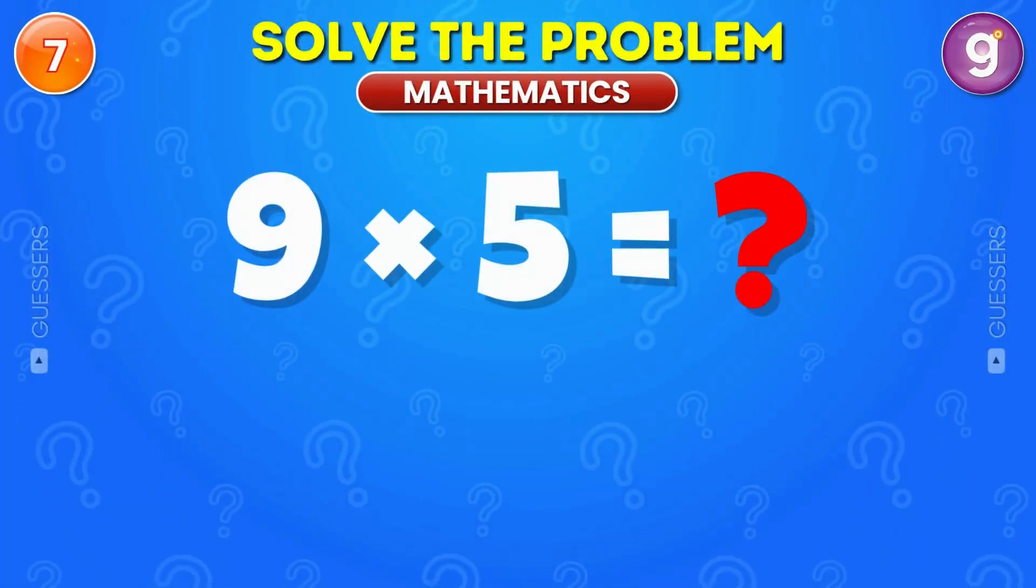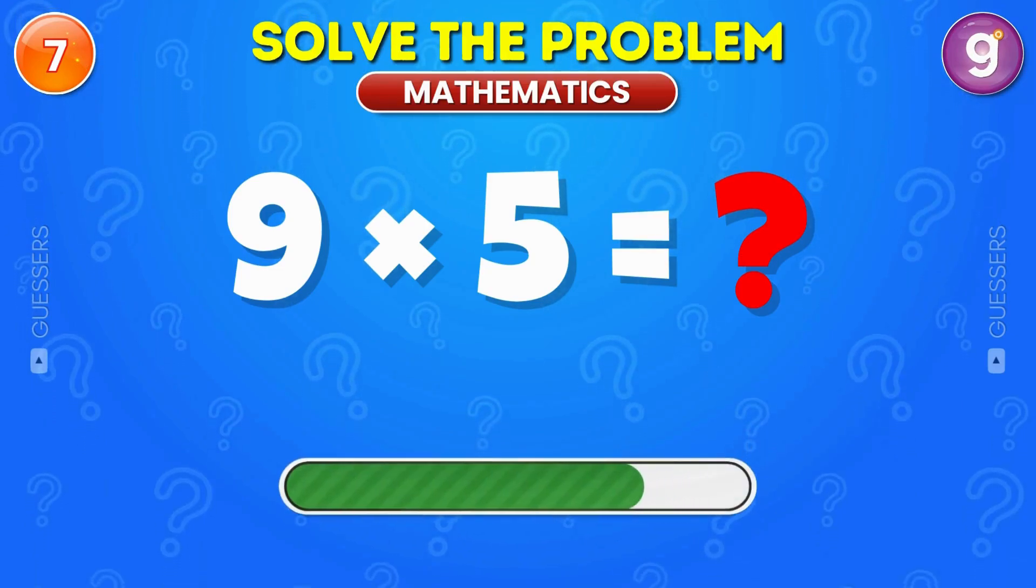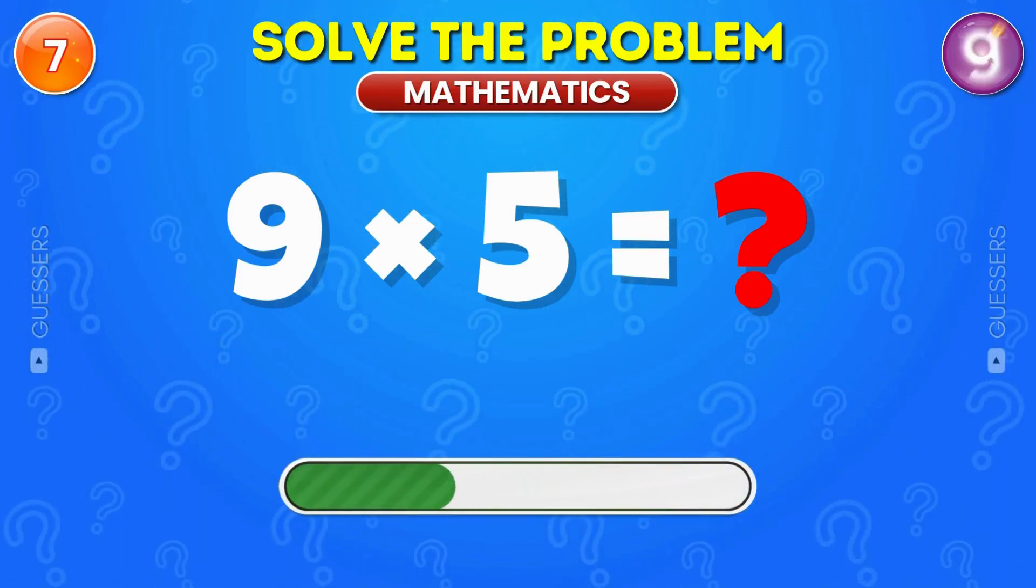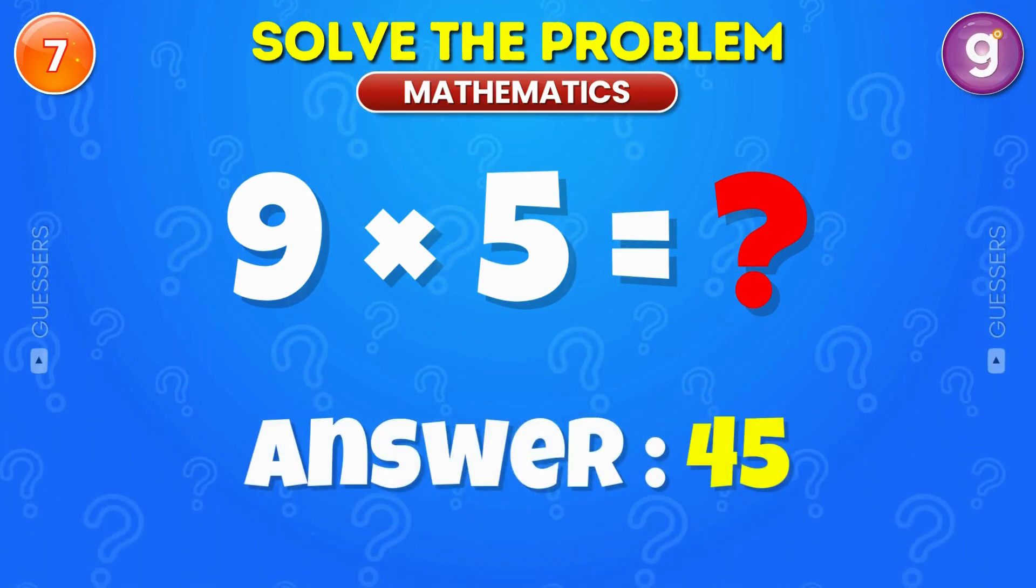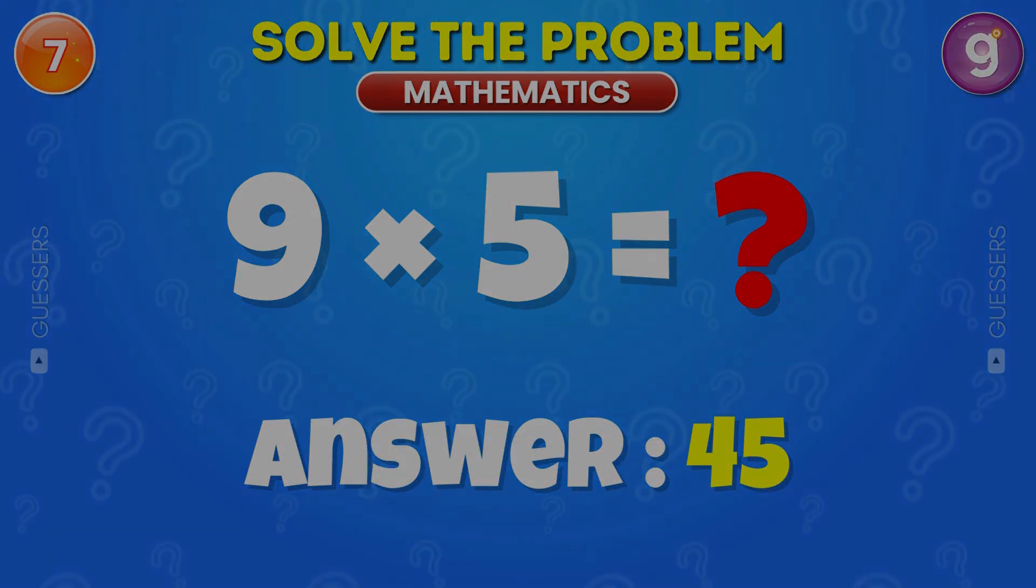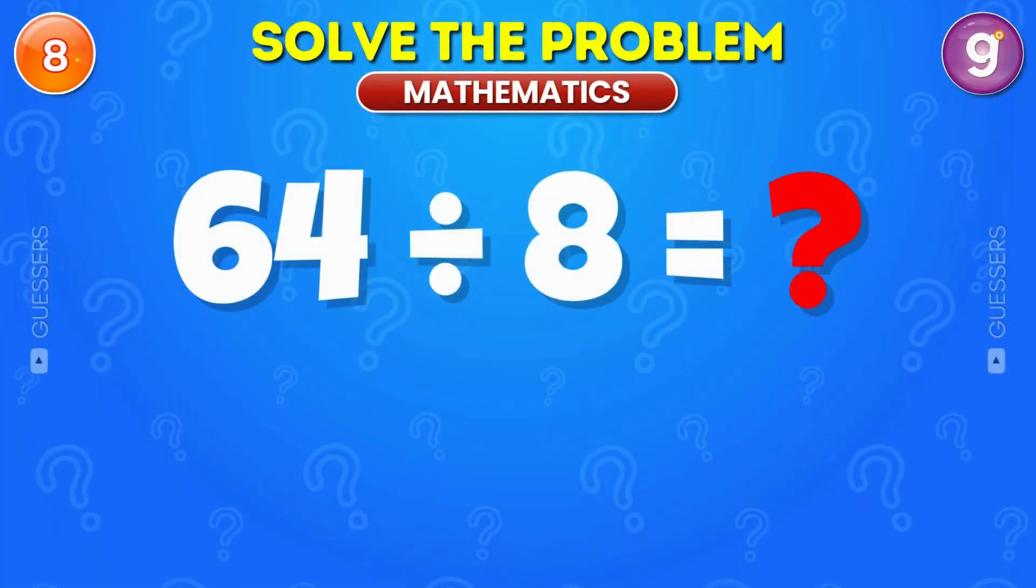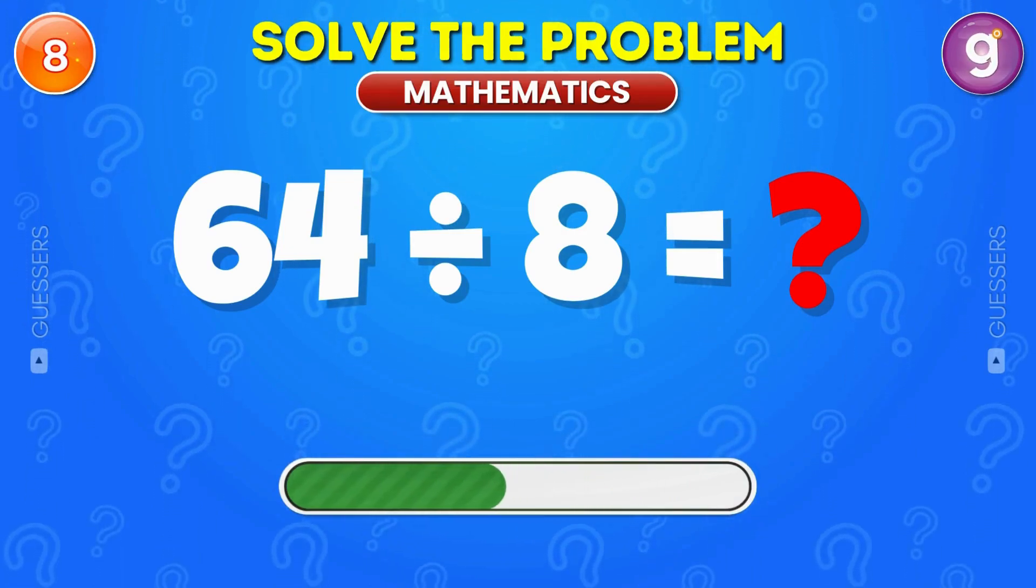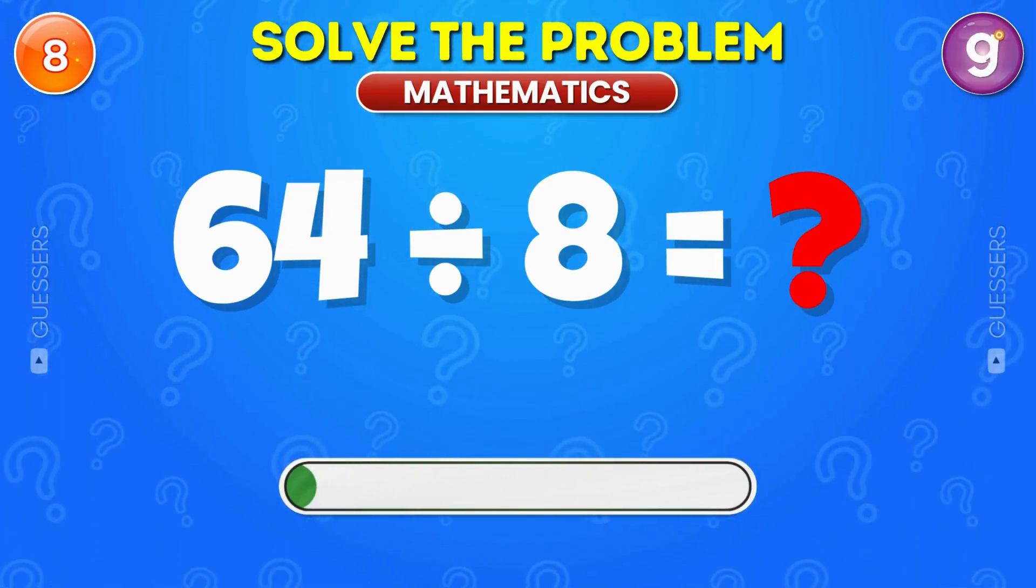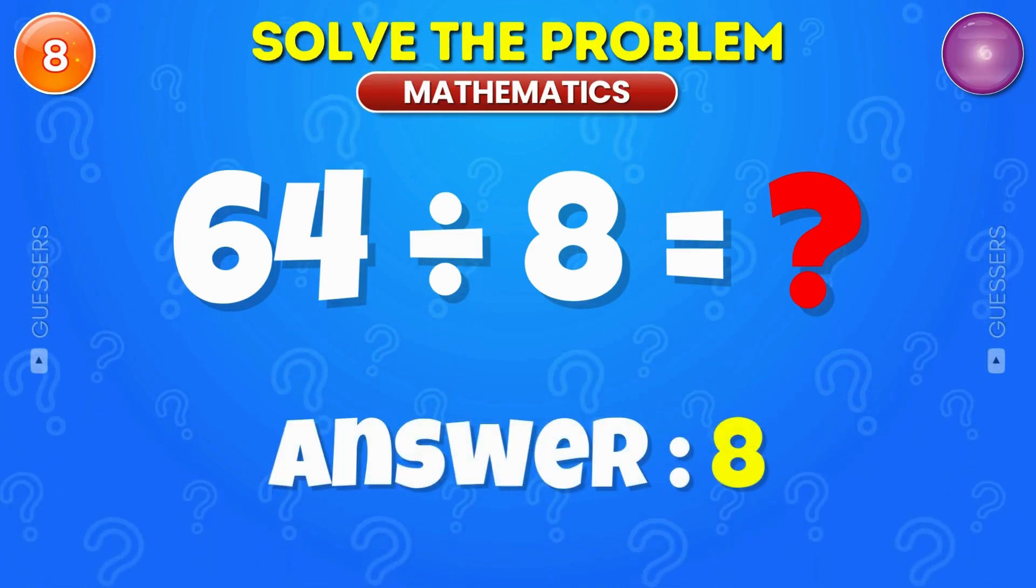What is 9 times 5? It's 45. Divide 64 by 8. The answer is 8.